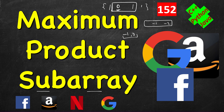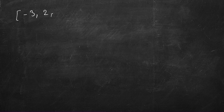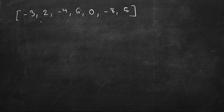Let's take an example to understand our logic. Let's say we have: minus three, two, minus four, six, zero, minus eight, five. This is a good enough example and we will cover all the scenarios.